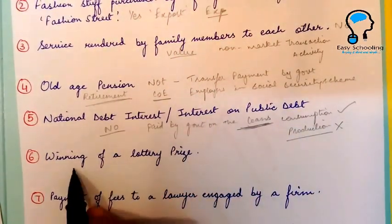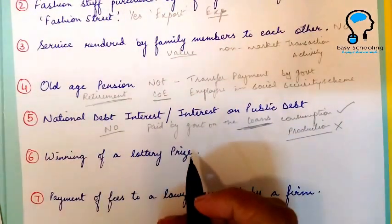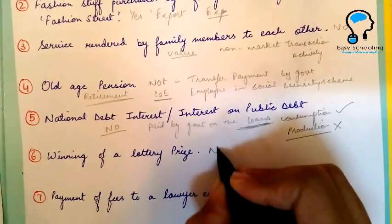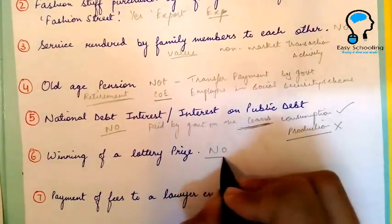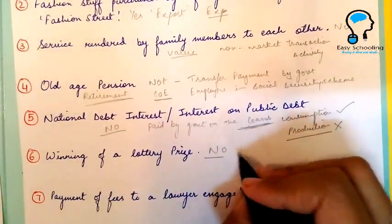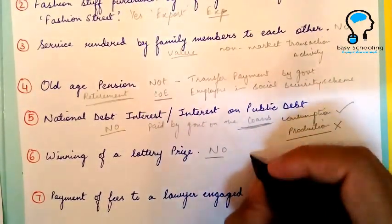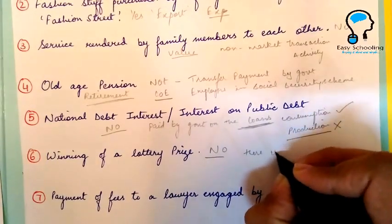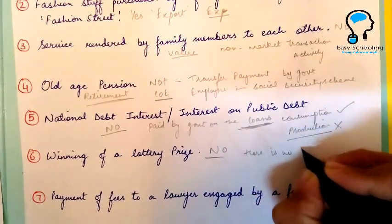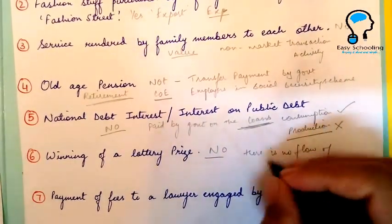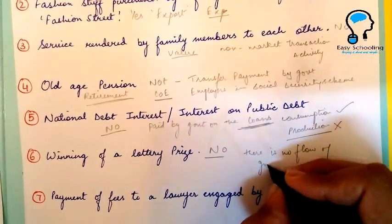Next is winning of a lottery prize. No, this will not be included because there is no flow of goods and services.